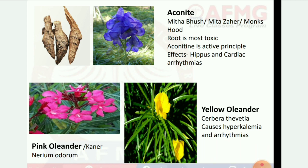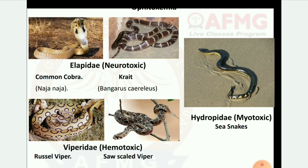Next image: neurotoxic snakes — common cobra, krait, sea snakes. And Viperidae — hematotoxic: Russell's viper and saw-scaled viper.